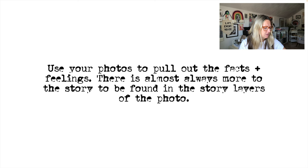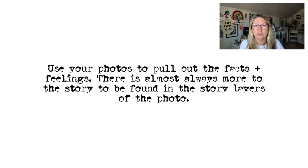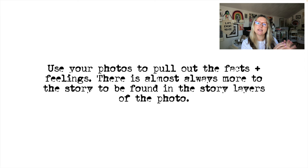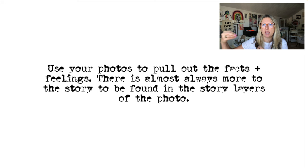When we talked about this in the previous video, the invitation was to name three facts and three feelings about right now. When I do that kind of journaling, I'm mainly just sitting — I'm not necessarily using a photo as a jumping off point. I'm thinking, what are three facts about my life right now, and what are three feelings? That's one way to approach facts and feelings journaling. Another way is by using photos as the jumping off point, and you use those photos to literally excavate and pull out both the facts and the feelings in the story layers of those photos.